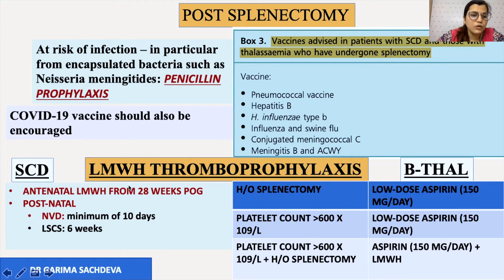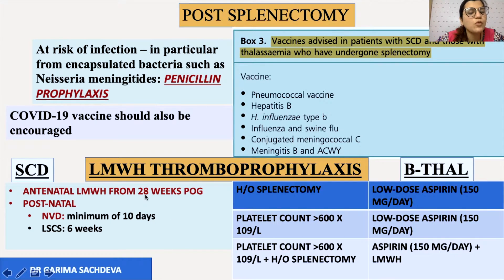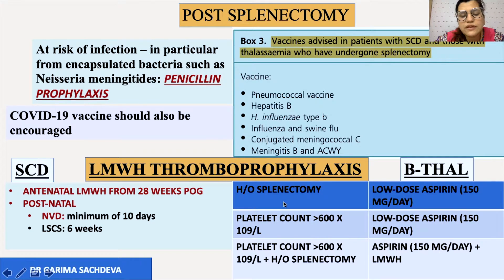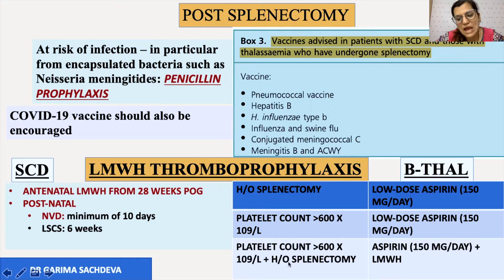For low molecular weight heparin prophylaxis in sickle cell disease, LMWH should be given to all women from 28 weeks of gestation. Post delivery, if it is a normal delivery continue for 10 days; if it is a caesarean section continue for six weeks. For beta thalassemia, prophylaxis depends on whether the patient has had splenectomy and whether there is thrombocytosis with platelet count more than 600,000. Splenectomy alone or platelets over 600,000 alone warrants low dose aspirin; both together require aspirin plus LMWH.